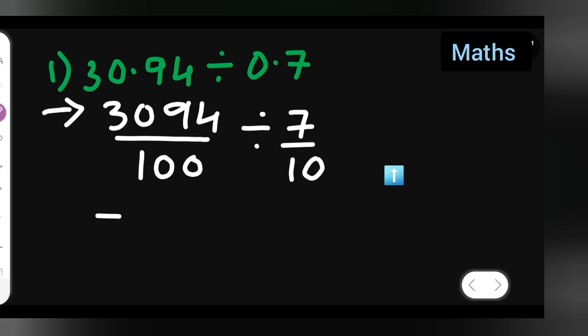Write this as 3094 upon 100 divided by 7 upon 10. Instead of dividing, we multiply by the reciprocal. The reciprocal of 7 upon 10 is 10 upon 7.